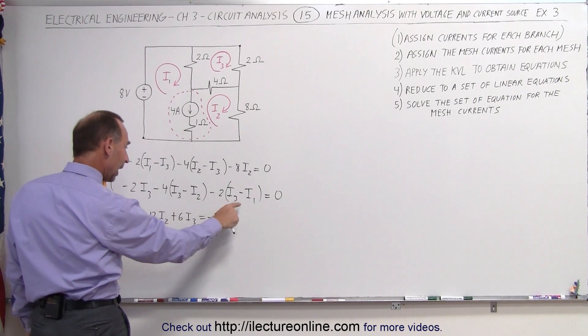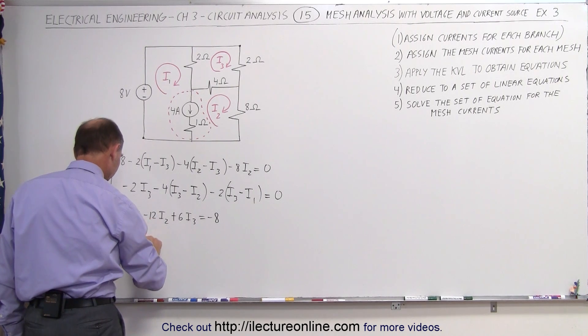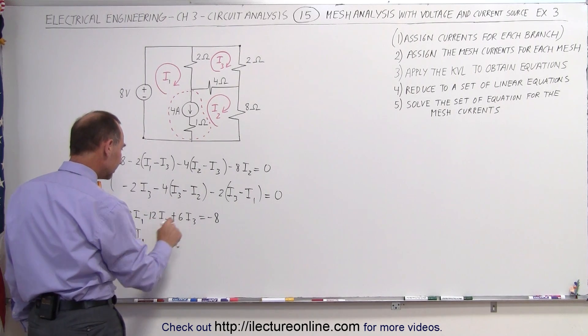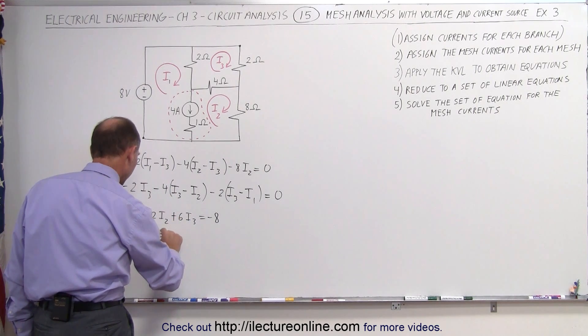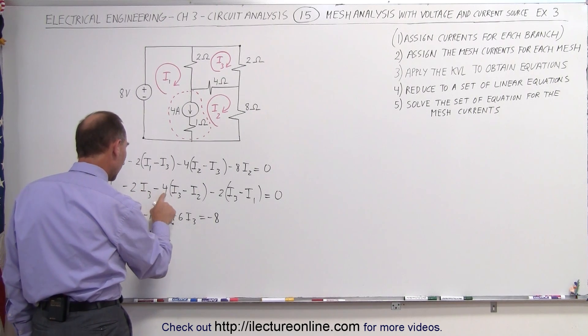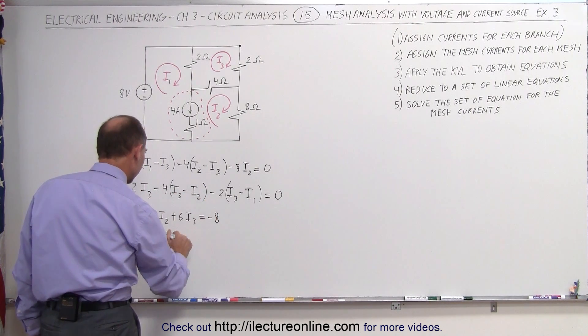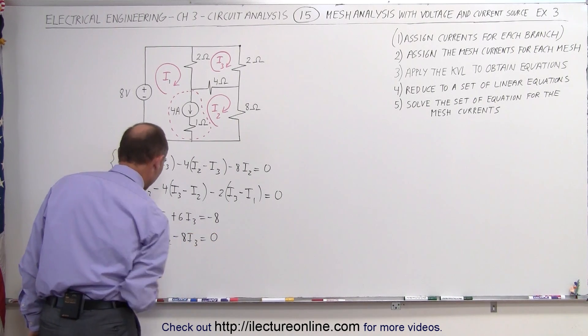Second equation, we have a plus 2I1. For I2, we have a plus 4I2, and for I3, a minus 2, a minus 4, and a minus 2, that's minus 8I3, and that adds up to 0.